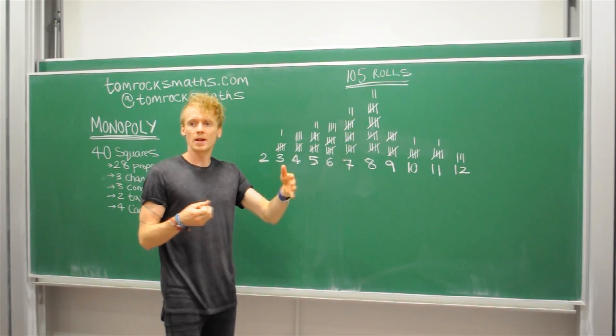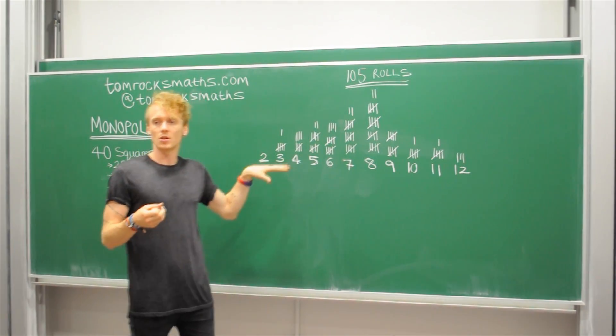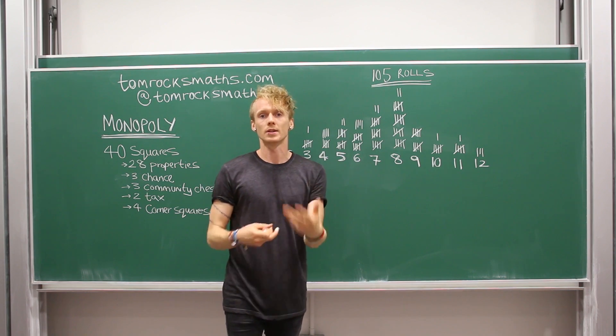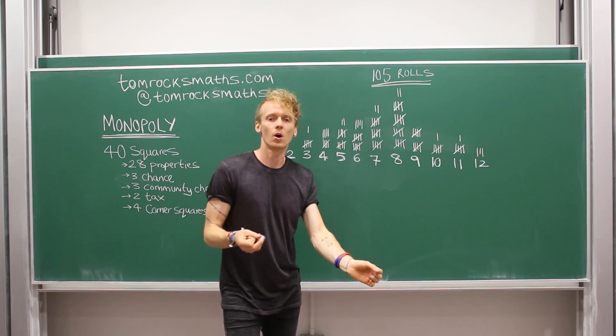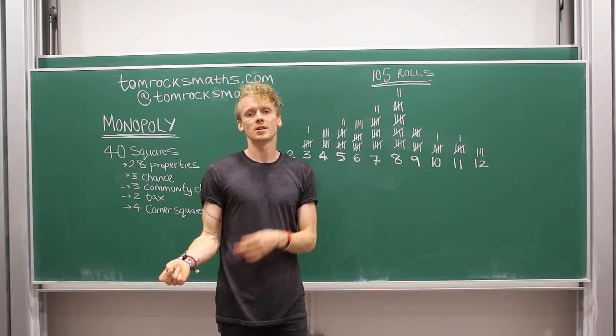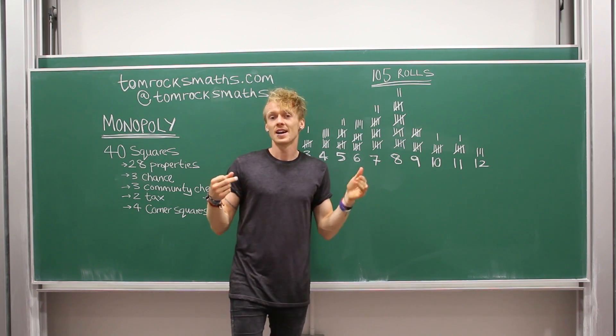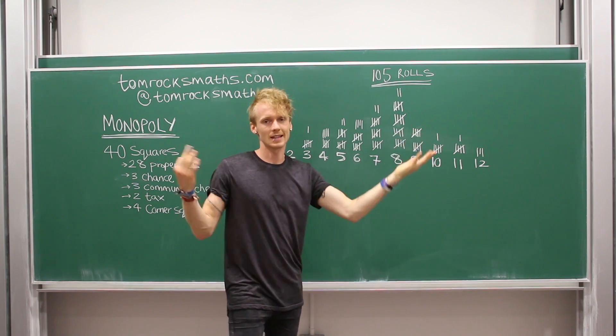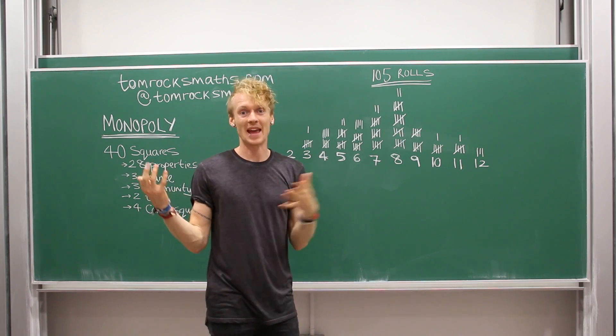So let's start with the first number, number two. So I didn't roll a single two. The reason for that is to get a two when you're rolling two dice you've got to get a one on dice one and a one on dice two. So that's only a one in 36 chance. So really I should have got three or so total but again it's an experiment. There's going to be errors. It's not going to work exactly.